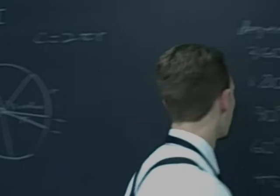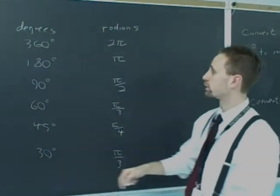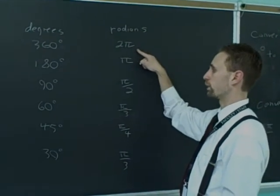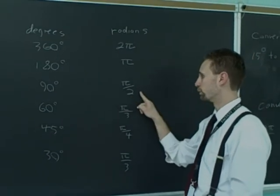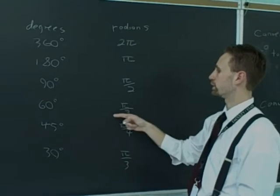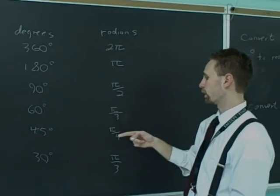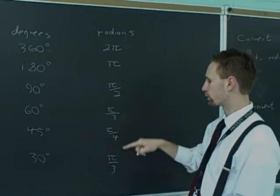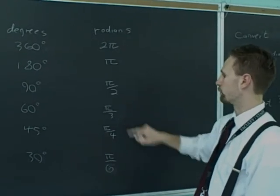From here, the convenient conversions from degrees to radians. We already said that 360 degrees is 2π in radians. You divide those by 2, 180 is π. 90 is π over 2, because it's half of 180. 60 is π over 3, because it's 1 third of 180. 45 is π over 4, because it's half of 90. And 30 degrees is π over 6, because it's half of 60 degrees.